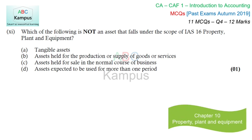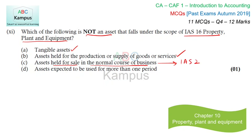Which of the following is not an asset that falls under the scope of IAS-16 Property, Plant and Equipment? Tangible assets — IAS-16 applies. Assets held for production and supply of goods or services, such as plant and machinery — IAS-16 applies. Assets held for sale in the normal course of business — this is an asset, but IAS-2 Inventories applies to it, not IAS-16. Assets expected to be used for more than one period — these fall under IAS-16. So option C would be correct.